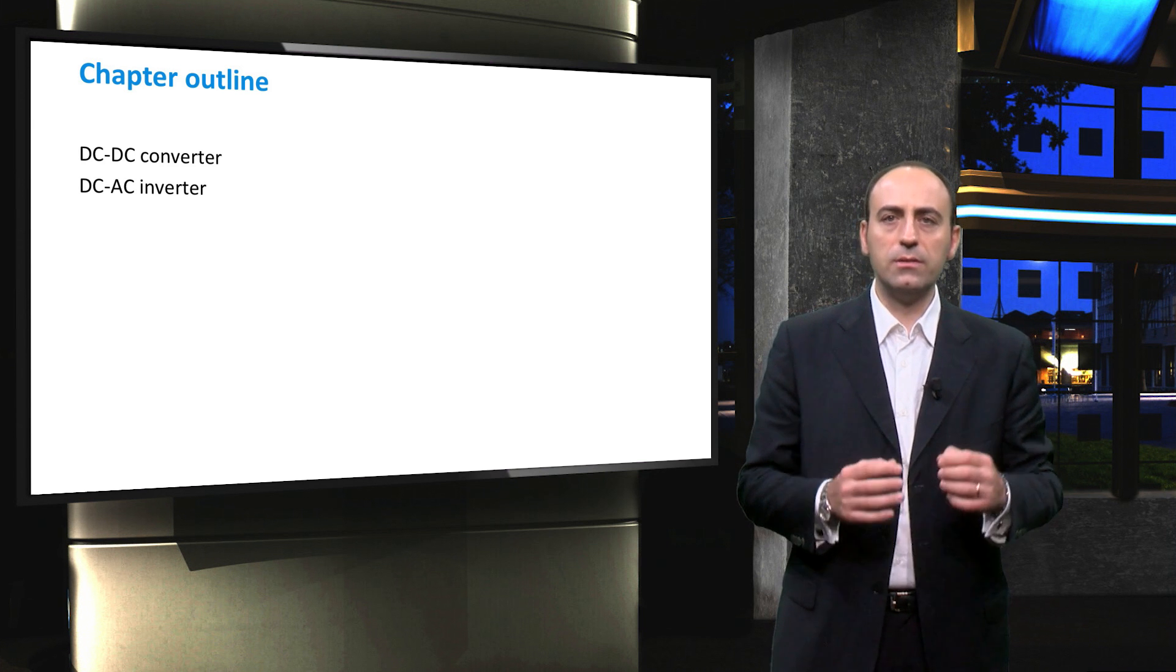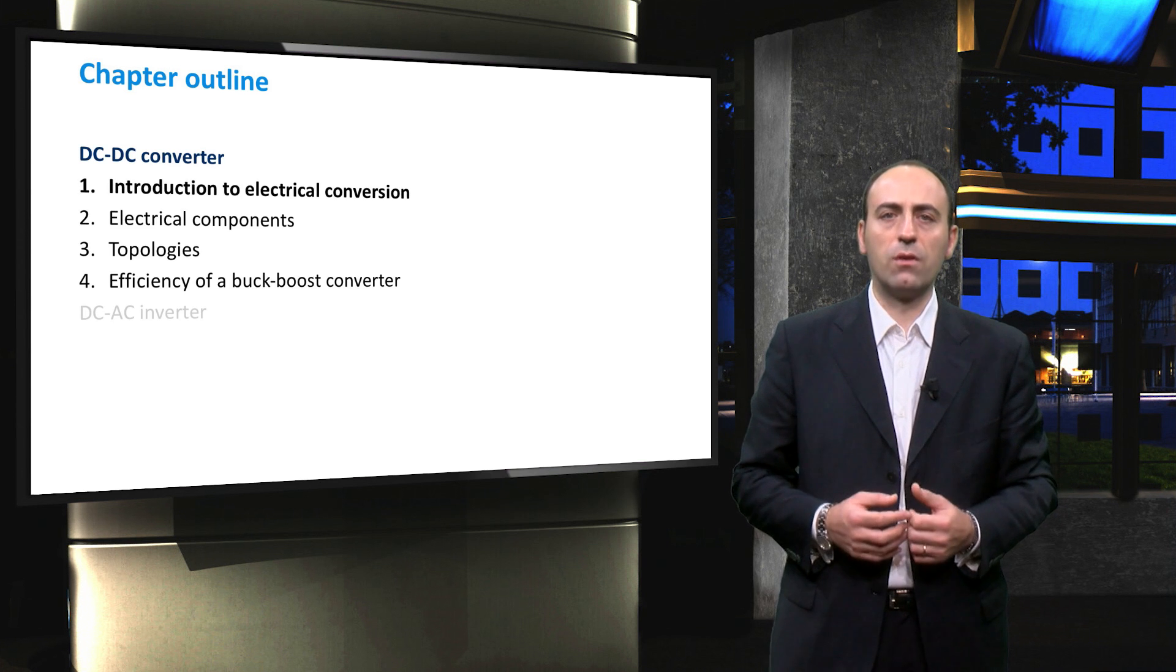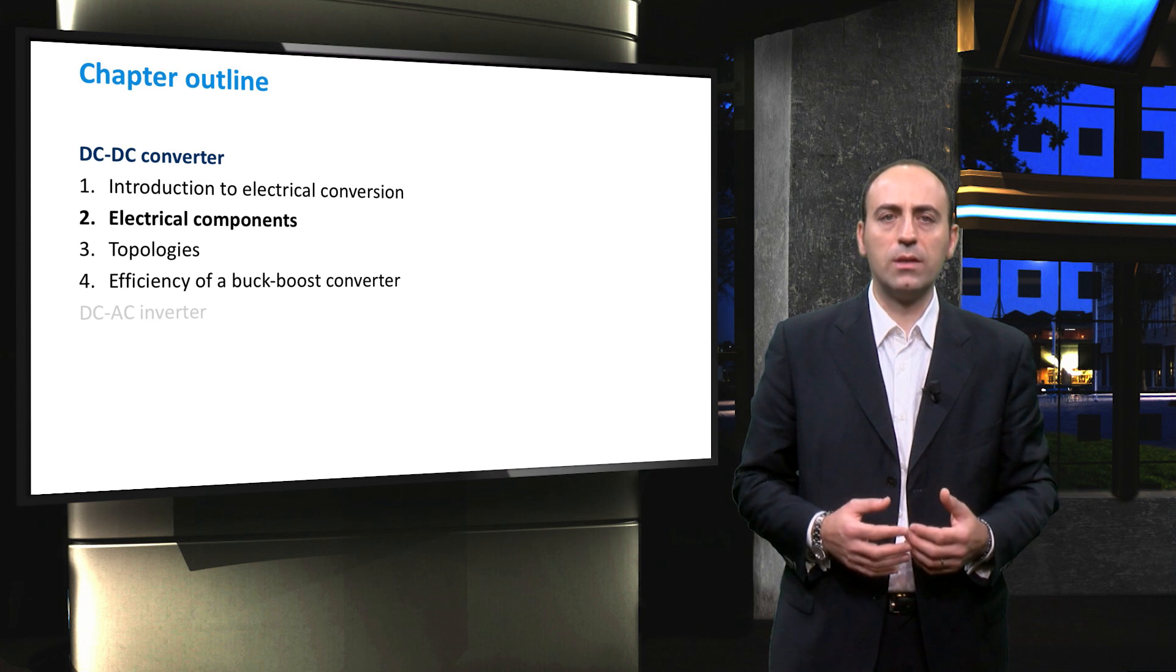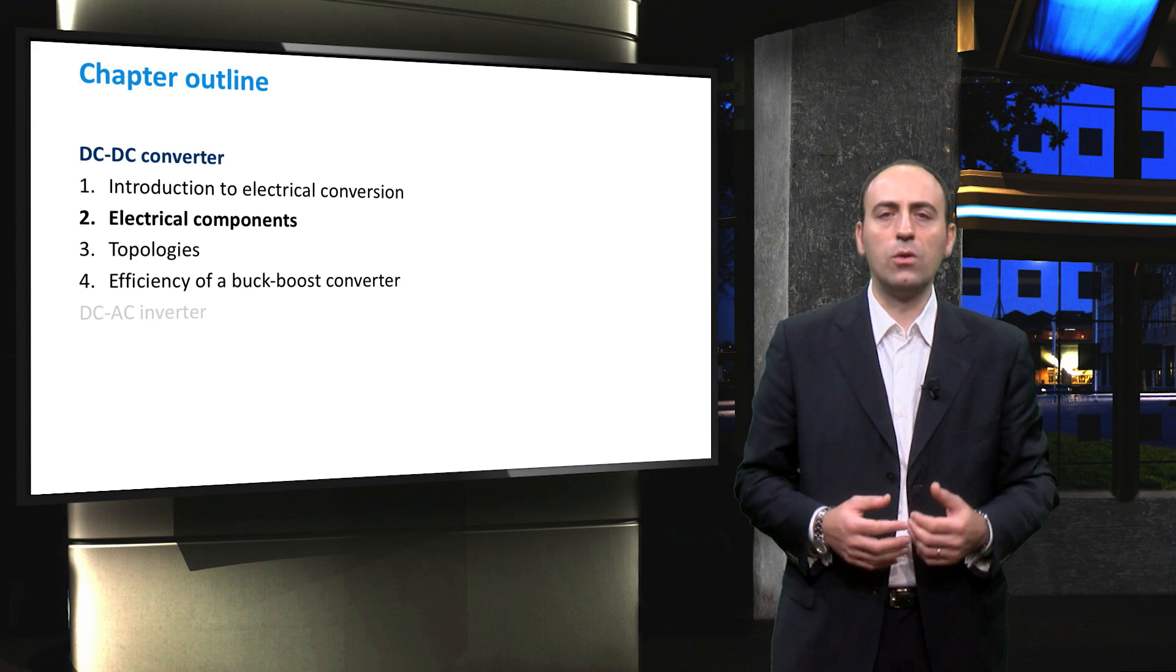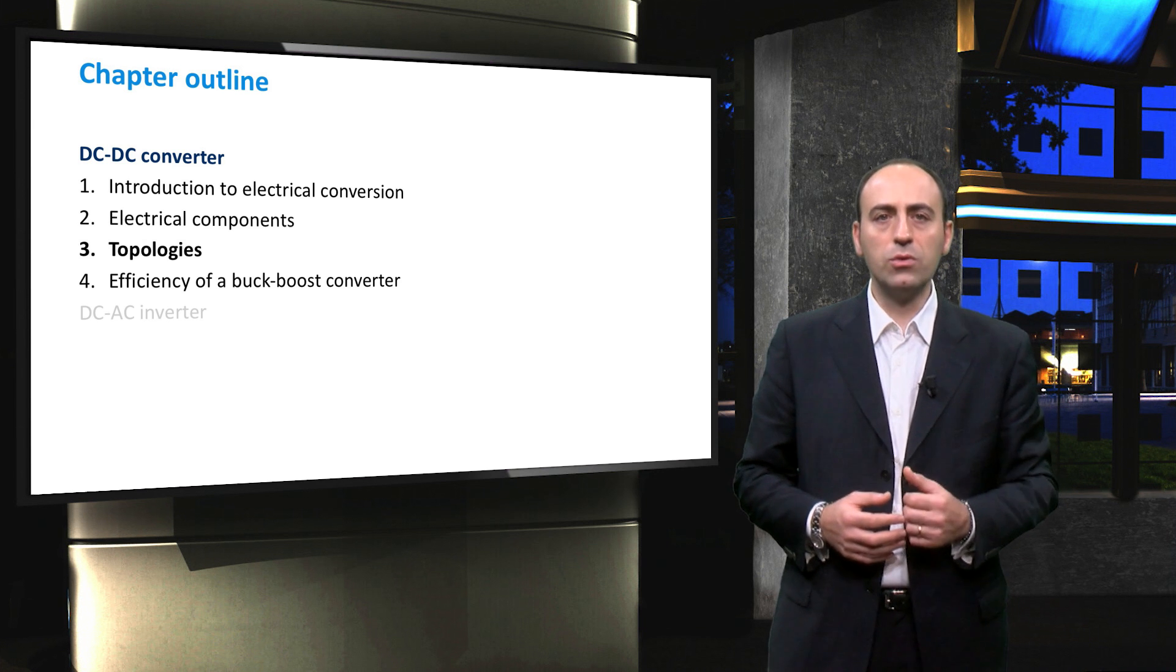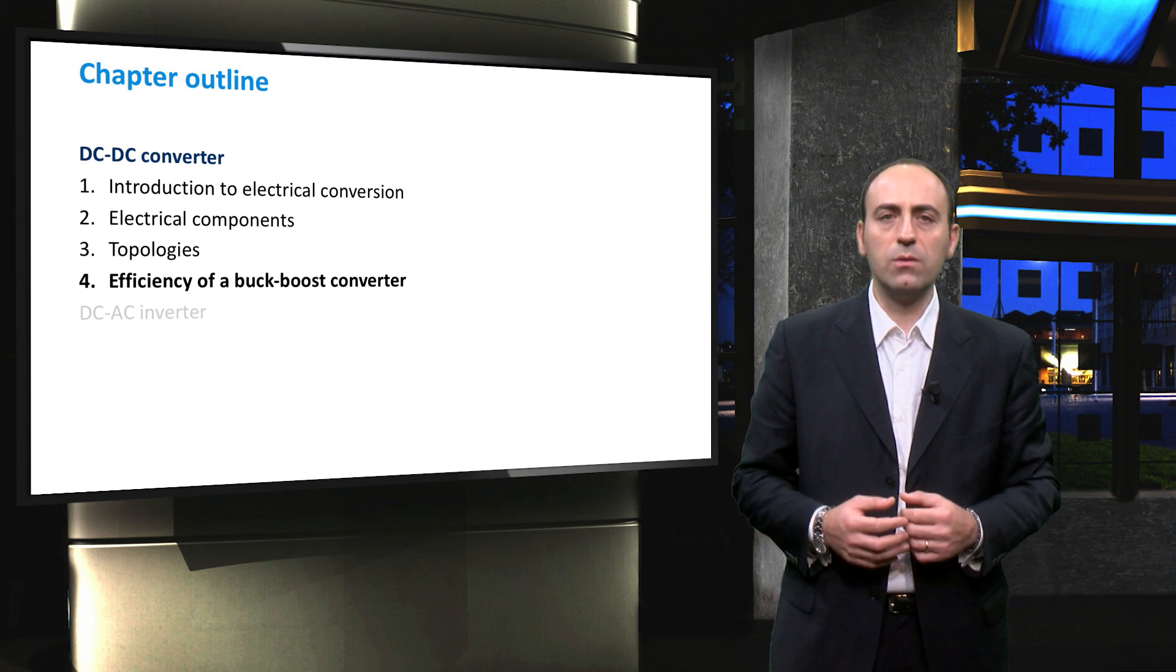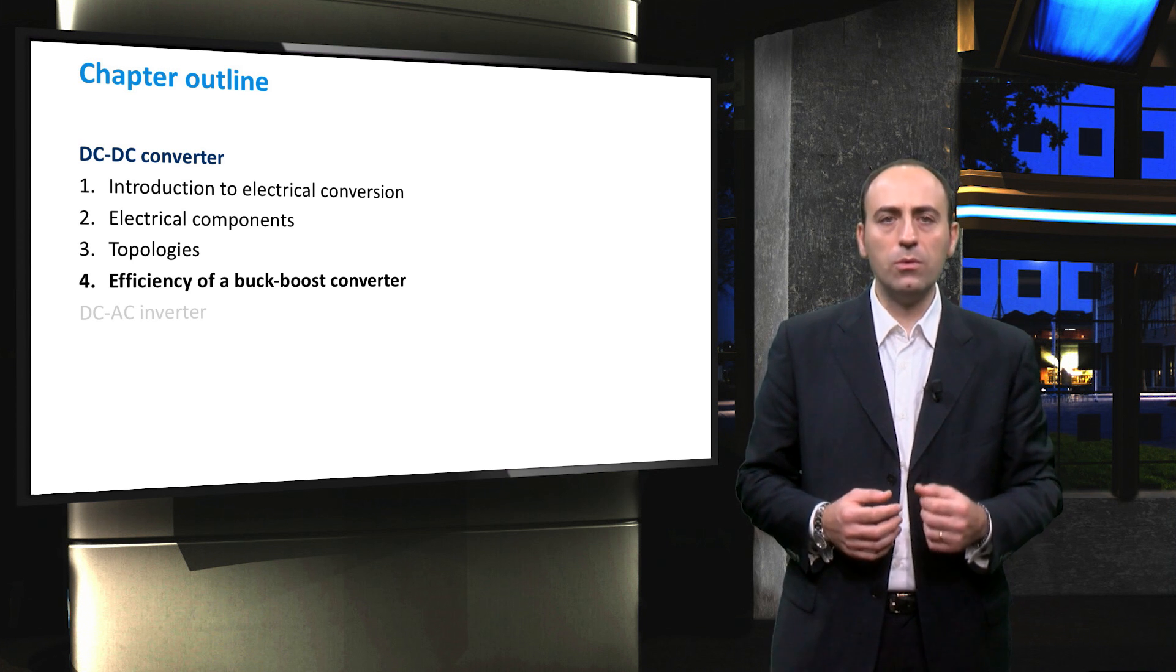Let's start with the DC-DC converter by giving you the first definition of the DC-DC converter and then showing the power electronics to be used. Then we shall describe the topologies to step up or down the voltage coming from the PV side respectively, the buck or the boost converter. Lastly, we will deal with the buck-boost converter which encompasses the two previous cases and we will compute its efficiency.